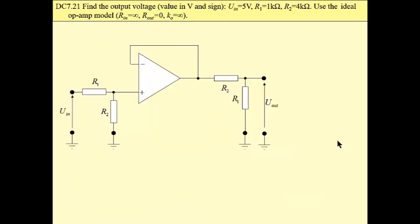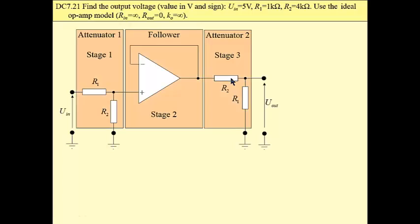And finally, another circuit. This time, at the left, here, we have a voltage divider. Then we have op amp circuit, a follower. And another attenuator, another voltage divider. Actually, we have three stages.